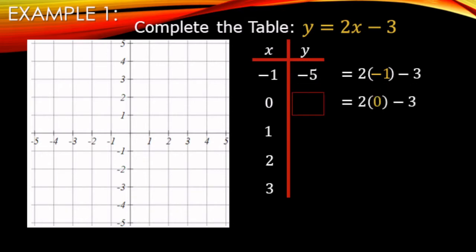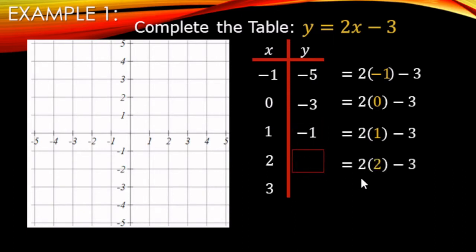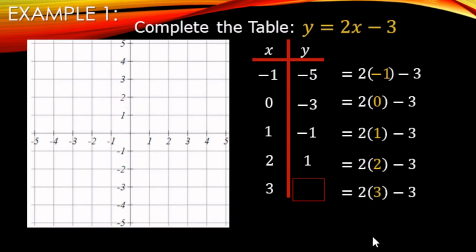Next, we change x to 0: 2 times 0 minus 3 is 0 minus 3, which makes negative 3. Then x = 1: 2 times 1 minus 3 is 2 minus 3, which makes negative 1. For x = 2: 2 times 2 minus 3 is 4 minus 3, which makes positive 1. And for x = 3: 2 times 3 minus 3 is 6 minus 3, which makes 3. So now we've found all the corresponding y values.